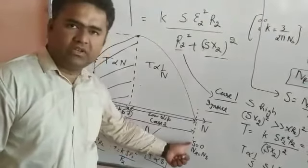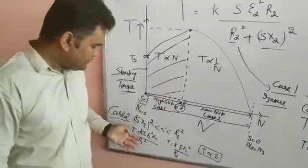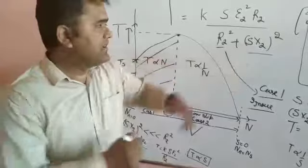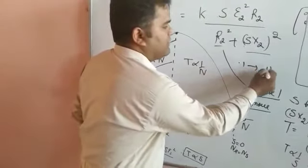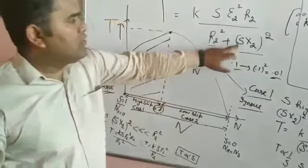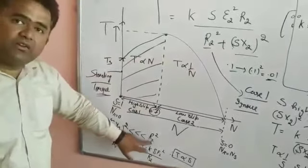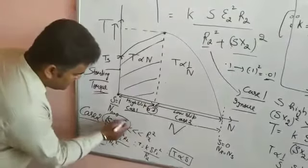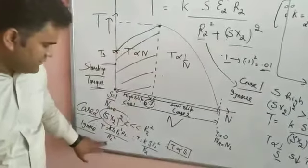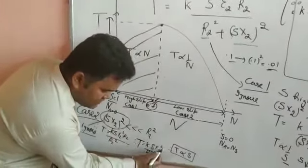Now for the other portion of the curve — Case 2, the low slip region from 0.7 down to 0. If the slip is low, say 0.1, then SX2 squared becomes 0.01, which is very small compared to R2 squared. So SX2 squared is very much less than R2 squared and we can ignore it. When we ignore SX2 squared, the denominator is only R2 squared, and torque becomes K times S times E2 squared upon R2.